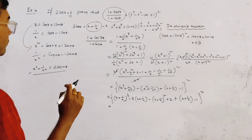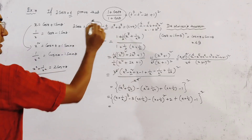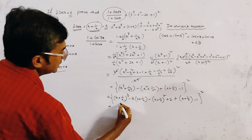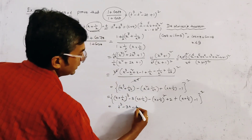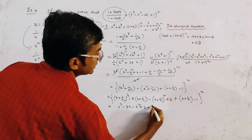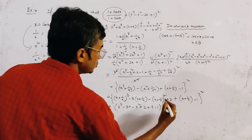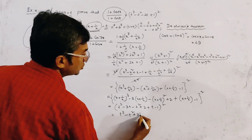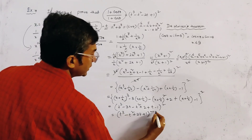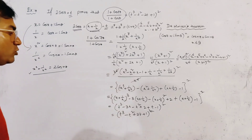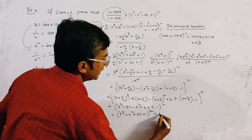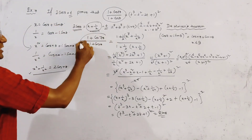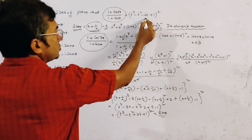Now substituting x + 1/x = t, since t = 2cosθ, we get (t³ - 3t) - (t² - 2) + t - 1, whole squared. This simplifies to (t³ - t² - 2t + 1)², which is exactly the right-hand side of the expression. Hence the expression is proved.